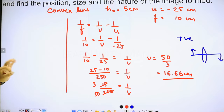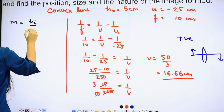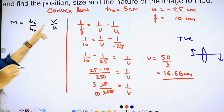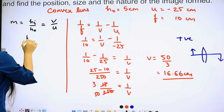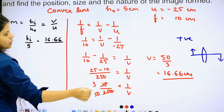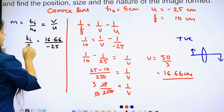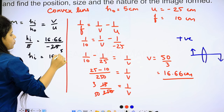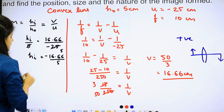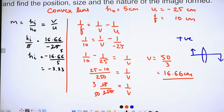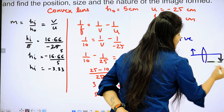We have already been given the height of the object. Magnification equals height of image upon height of object, and for a lens it also equals v upon u. Height of image upon 5 equals 16.66 upon minus 25. Solving: height of image equals 16.66 multiplied by 5 divided by minus 25. Simplifying, 5 divided by 25 gives 1 upon 5, so height of image equals minus 16.66 upon 5, which gives minus 3.3 cm. The negative sign confirms the image is real and inverted.